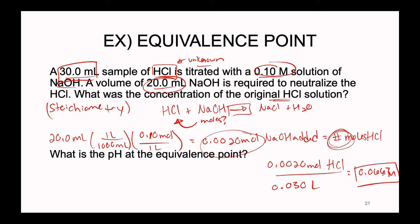That is how much HCl was present initially — this was the unknown concentration. The purpose of titration is: if we have an unknown concentration, we perform a titration, and once we hit the equivalence point, the molar amounts of acid and base must be equal. We can use that to calculate the initial concentration. Since we have been talking about pH, a really common question is: what is the pH at the equivalence point?